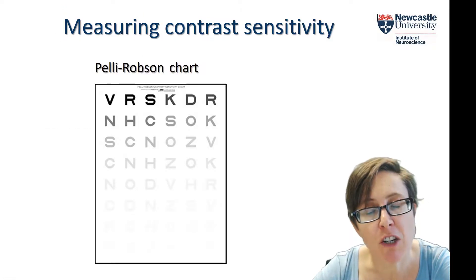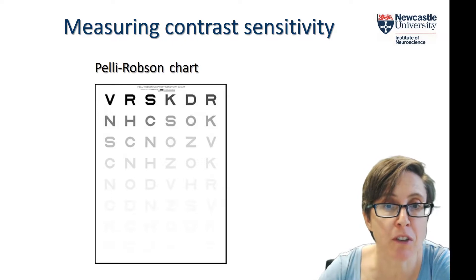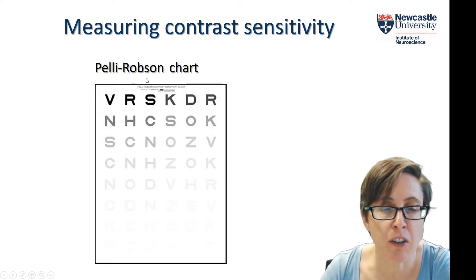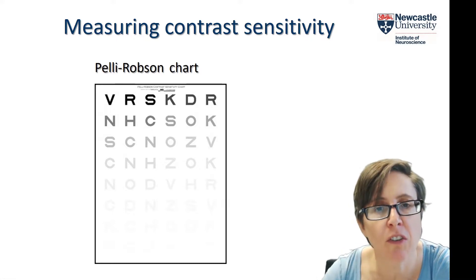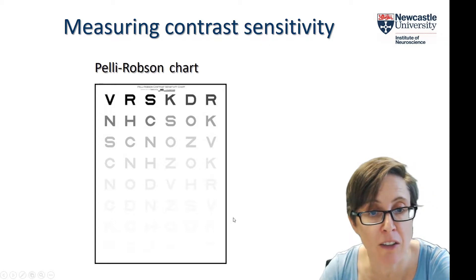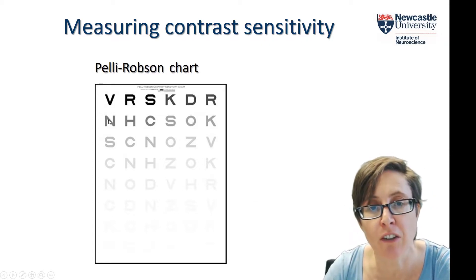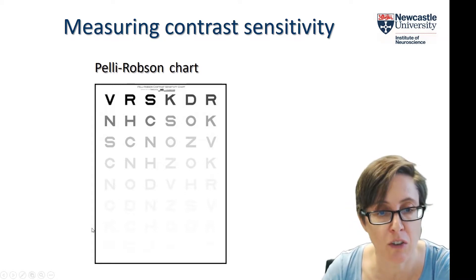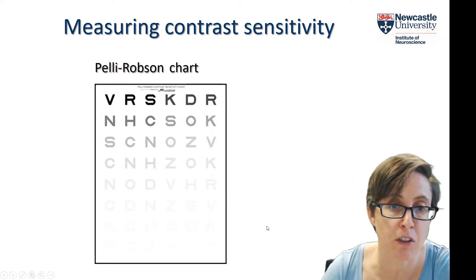For measuring contrast sensitivity clinically, we might use a Pelly Robson chart. It's a variation on the Snellen chart that you've probably seen at an opticians, where they ask how many letters you can read down as the letters get smaller and smaller. On the Pelly Robson chart it gets harder because the letters are getting lower and lower contrast as you go down, so you can ask how far down the chart somebody can read.